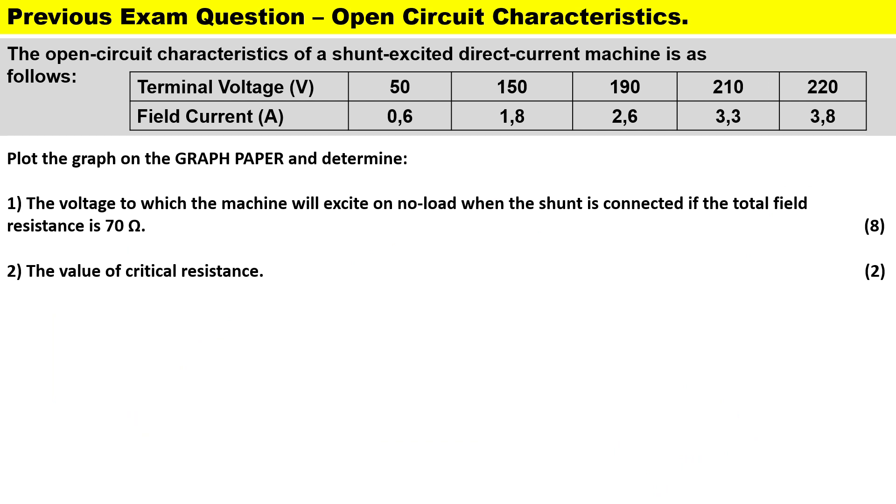Here we've been given the table. The open circuit characteristics of a shunt excited direct current machine is as follows. We have the terminal voltage and we have the field current given to us and we can go ahead and plot that. We need to plot on the graph paper and determine the voltage to which the machine will excite at no load if we are given a field resistance of 70 ohms, and we also need to calculate the value of the critical resistance.